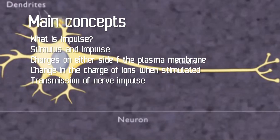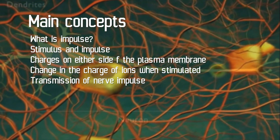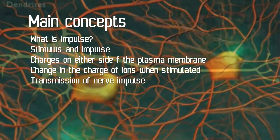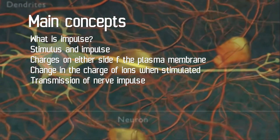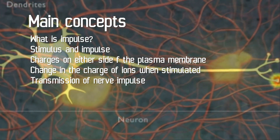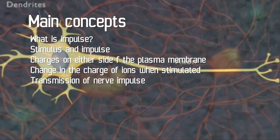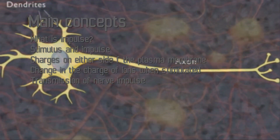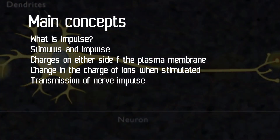Now we understand how impulses are generated in a neuron and how they are transmitted through it. The main concepts are: what is an impulse and what is the relationship between stimulus and impulse; what are the charges on either side of the plasma membrane; what is the reason for the existence of different charges on either side; what is the change in ion charges when the neuron is stimulated; and how impulses are transmitted through the neuron. In the next video, we will discuss how these impulses from the synaptic knob are transmitted to the next neuron.